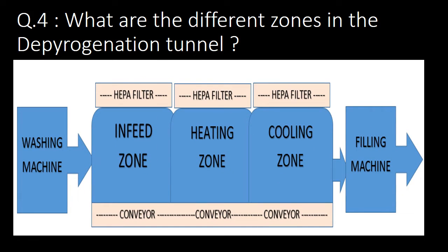Fourth important question: what are the different zones in depyrogenation tunnel? You can refer to the schematic diagram below to understand the different zones. After the washing machine where washing of vials or ampoules happens, washed ampoules or vials come into the depyrogenation tunnel's first zone, i.e. the inlet zone. From the inlet zone, vials or ampoules go to the next zone, i.e. the heating zone, and further they move to the cooling zone. After this, the depyrogenated vials or ampoules go for further filling process.